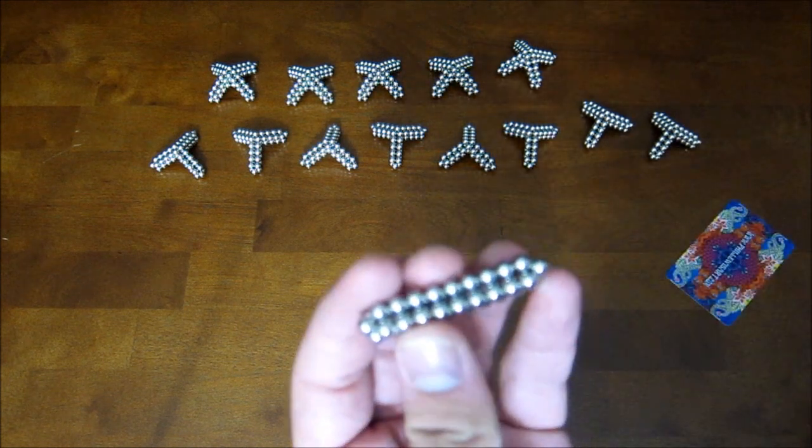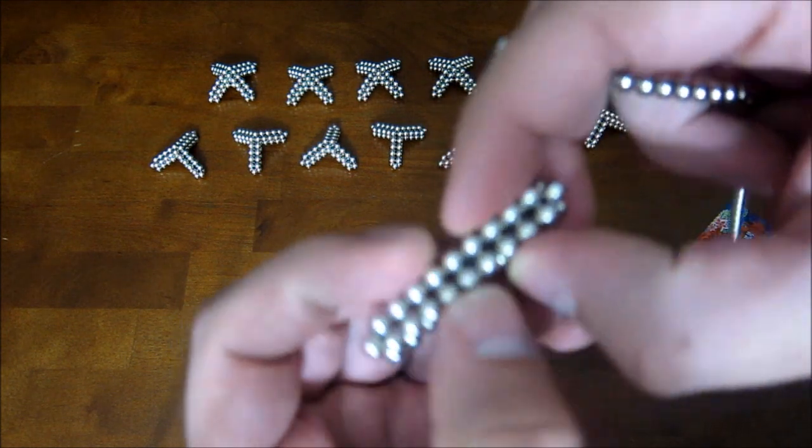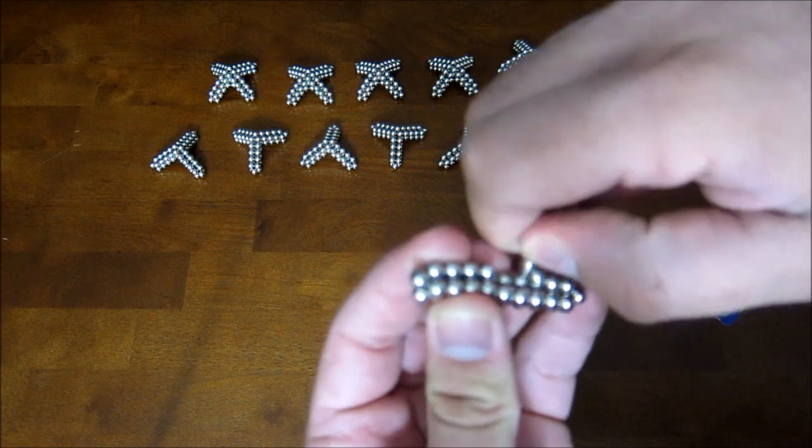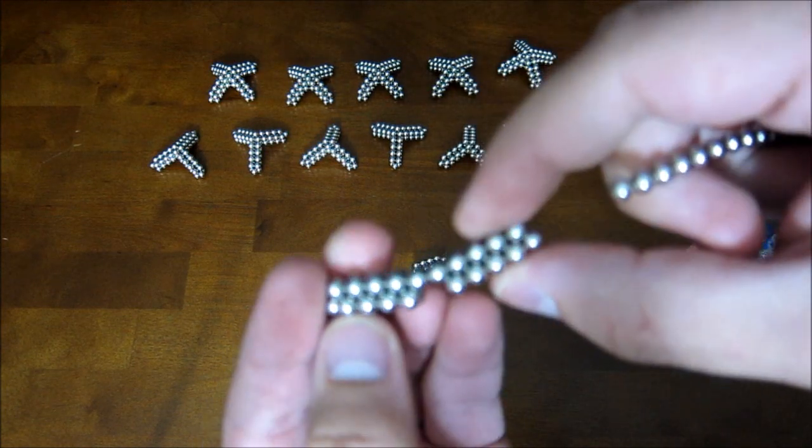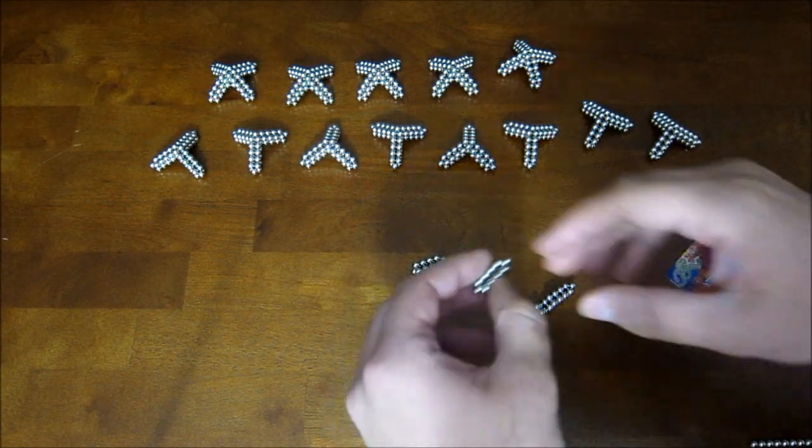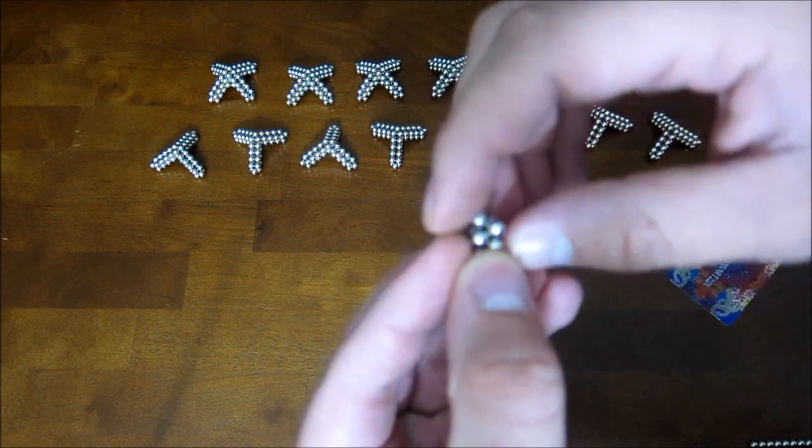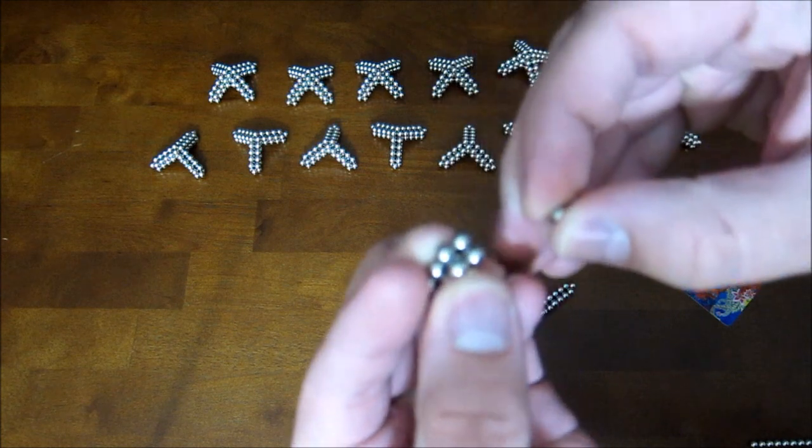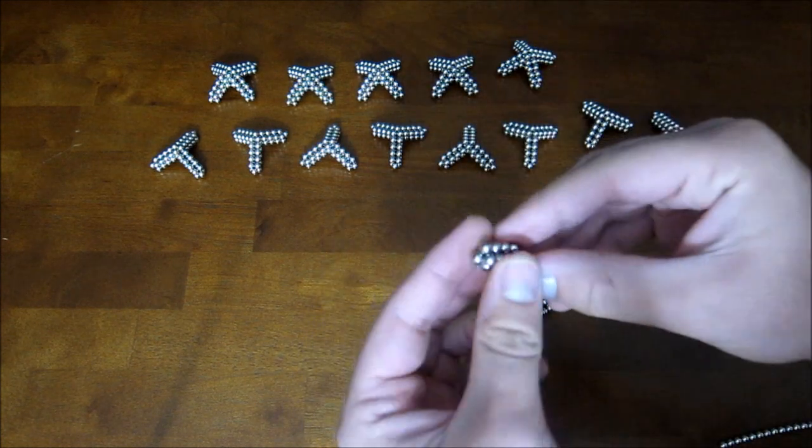Now, the first thing you do here is you use a chain to take out the two magnets in the very middle. Just like that. Then, you want to take the point magnet off of the end of these. Just like that. And do it to the other one too.